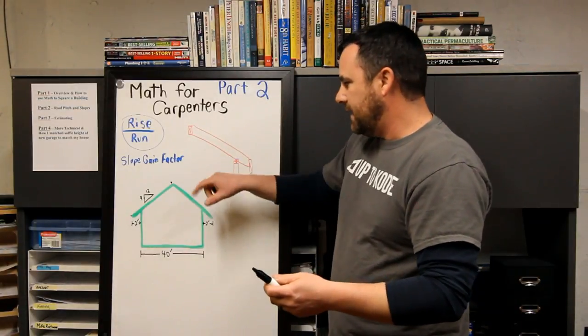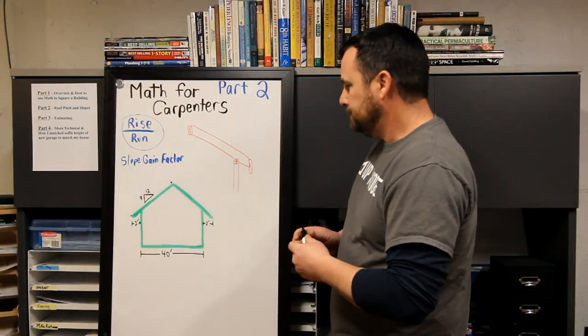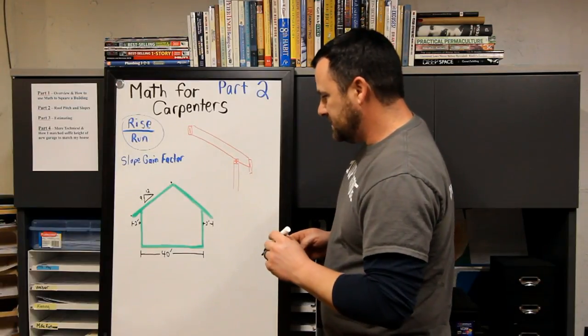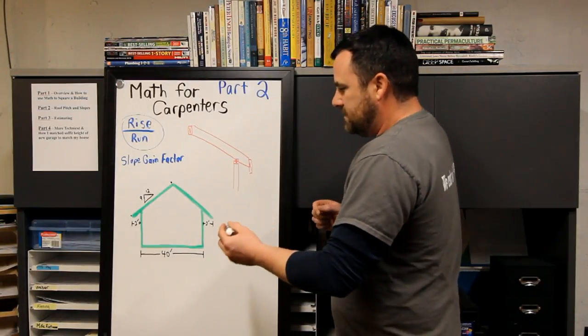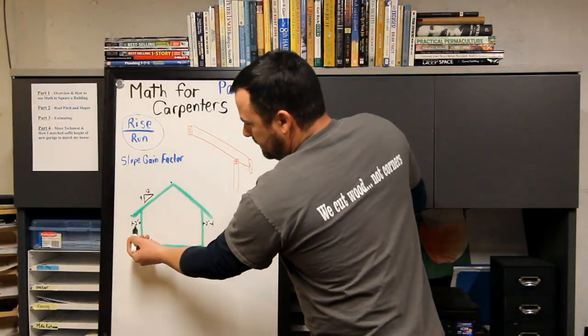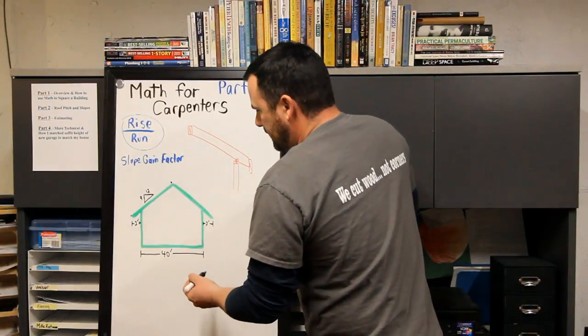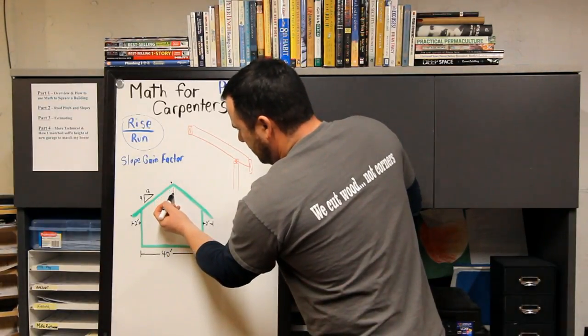This is how it's done. You're building this 40 feet wide, and you see my two-foot overhang, right? So if you look at it as a triangle...